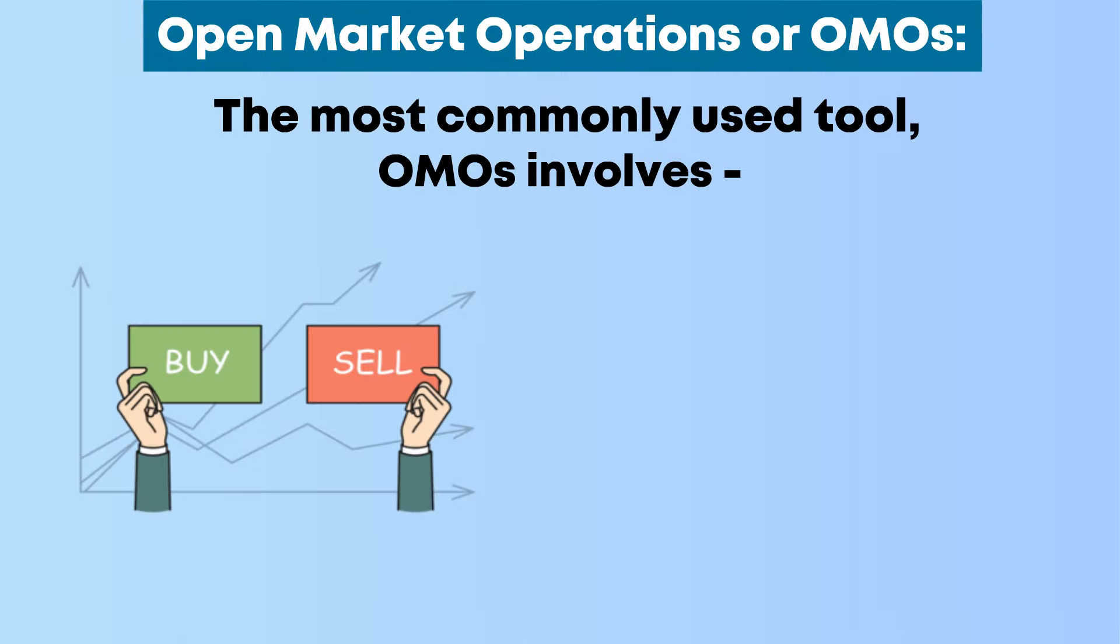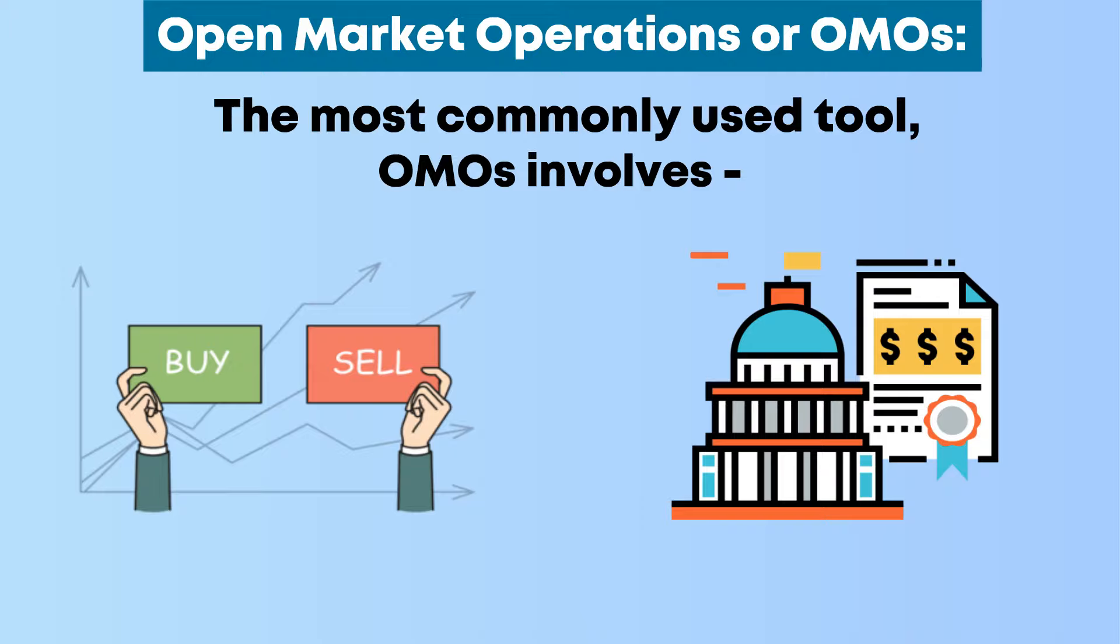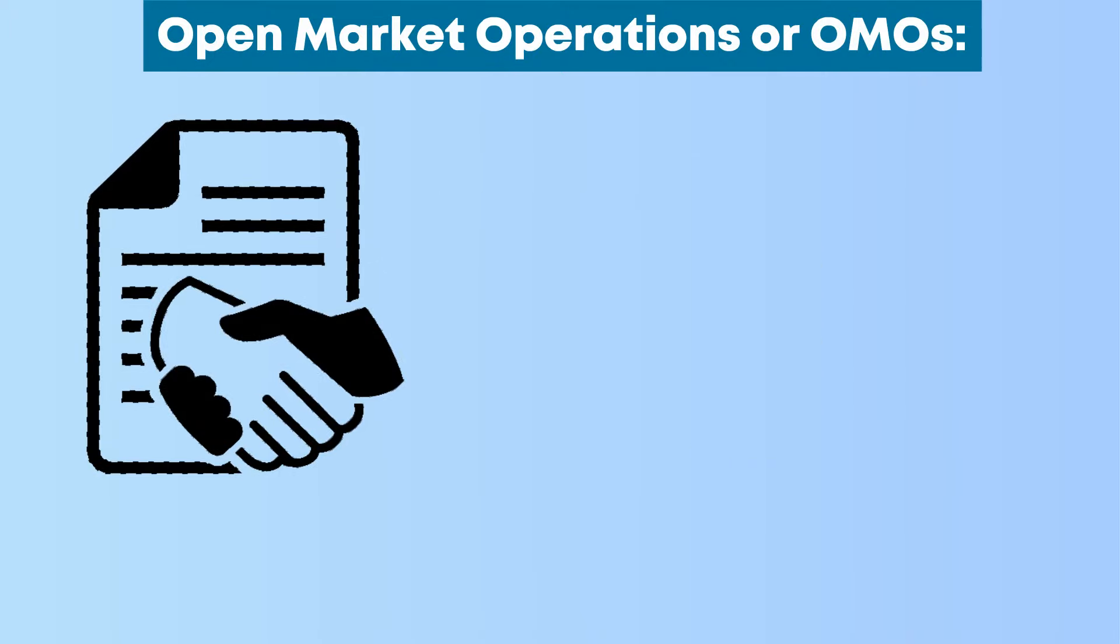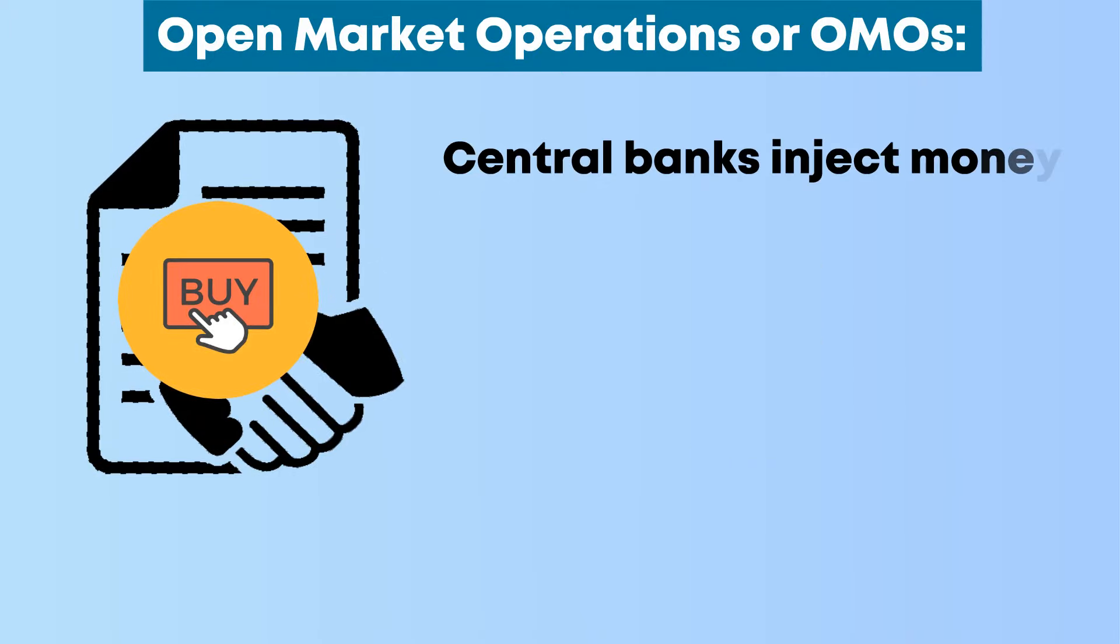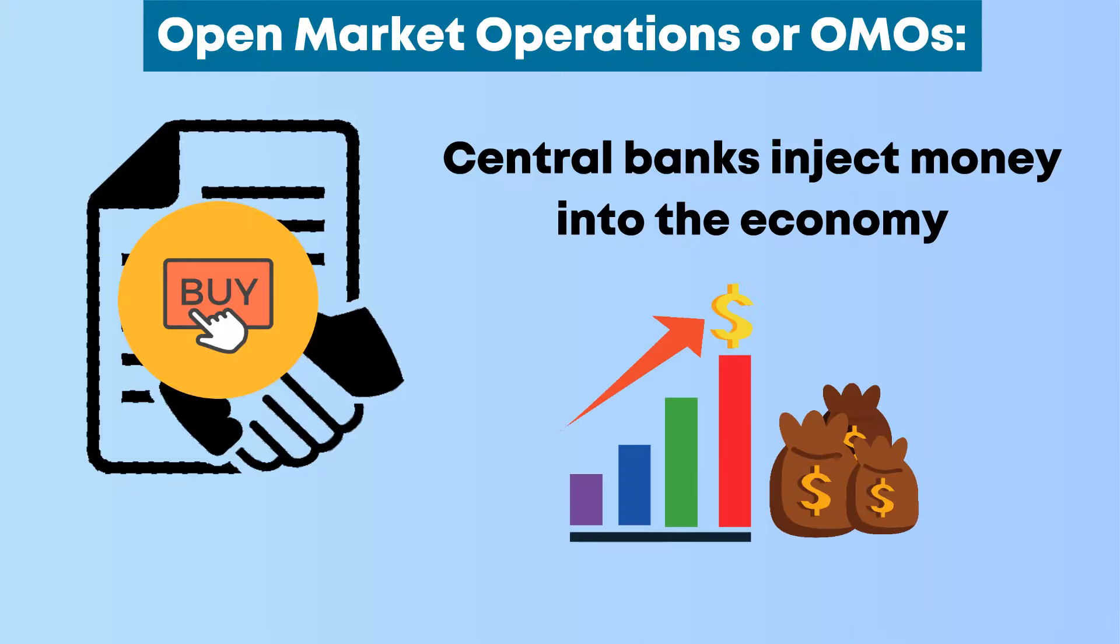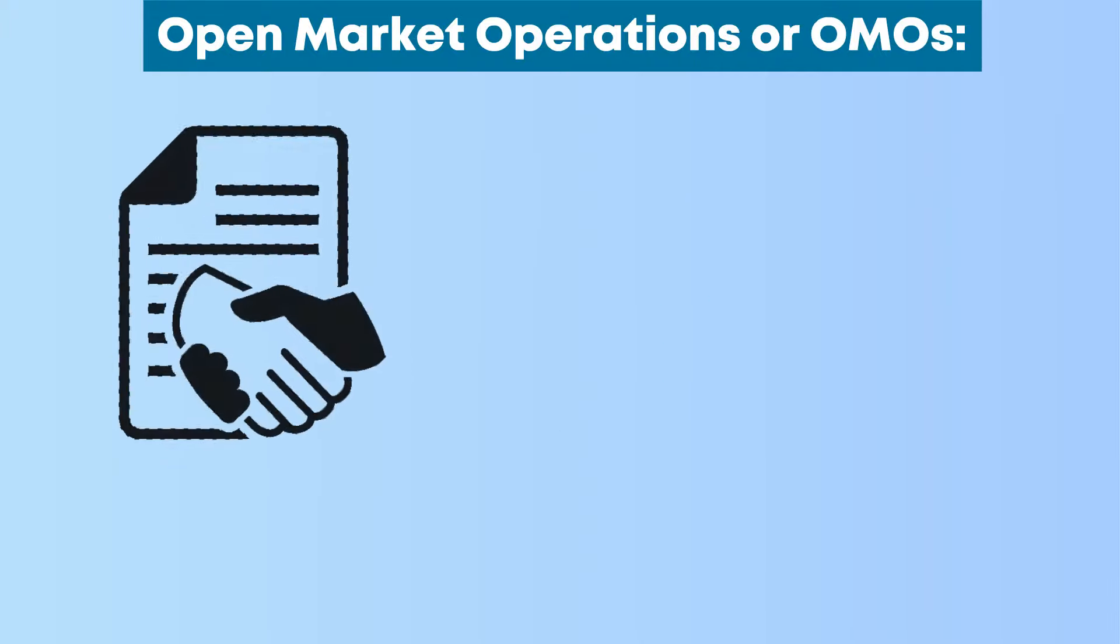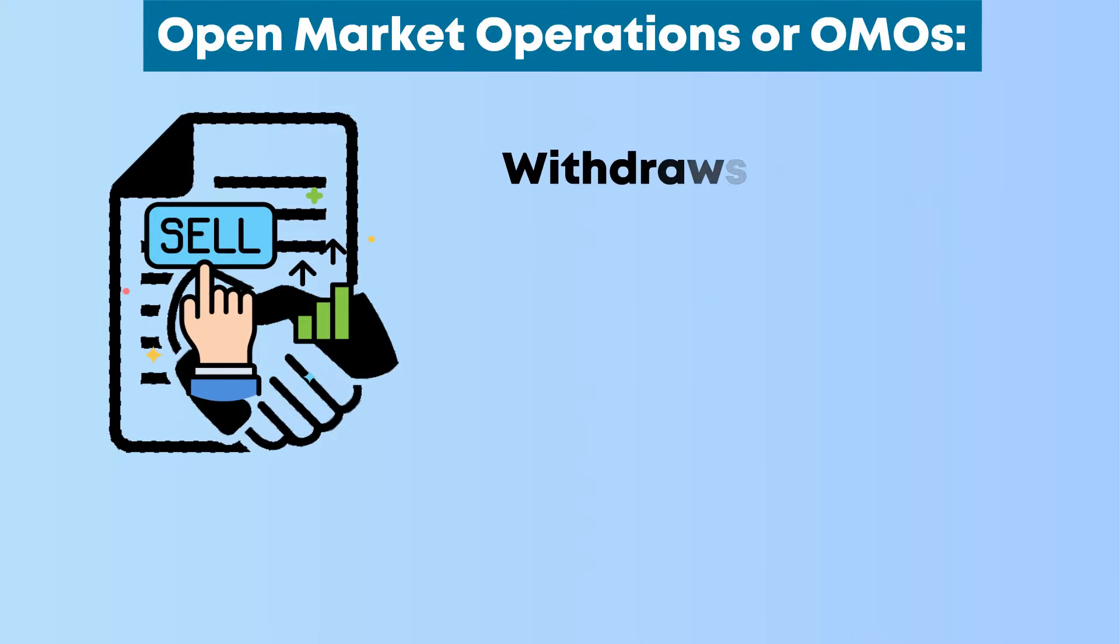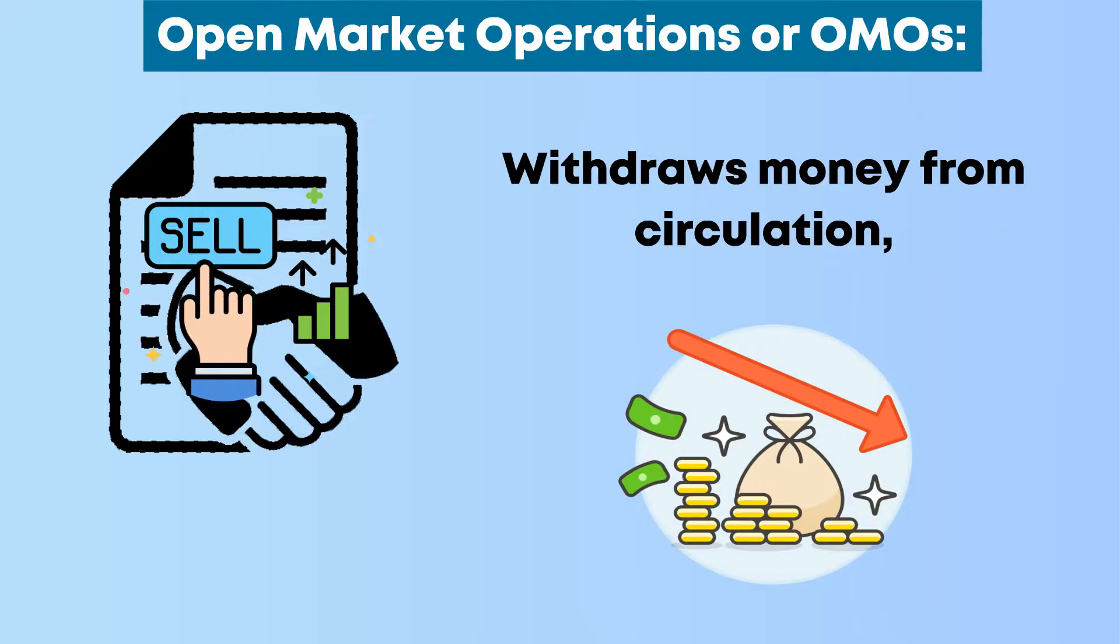The most commonly used tool, OMOs involve the buying and selling of government securities in the open market. By purchasing securities, central banks inject money into the economy, increasing the money supply. Selling securities, on the other hand, withdraws money from circulation, reducing the money supply.